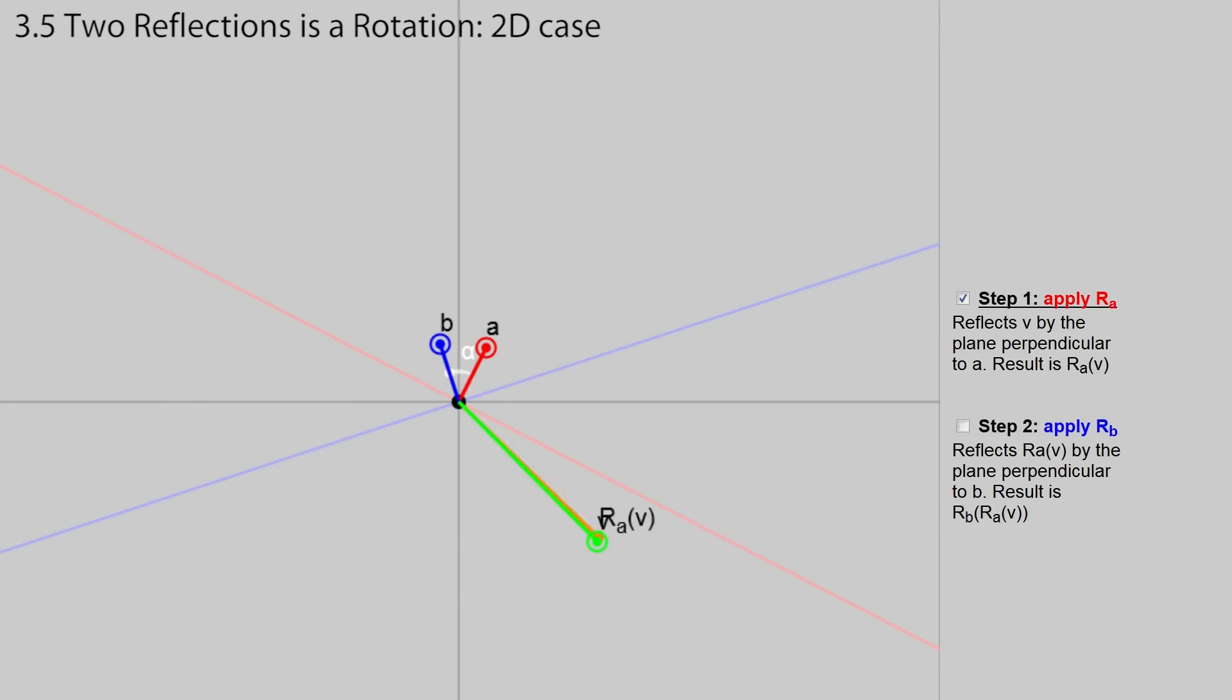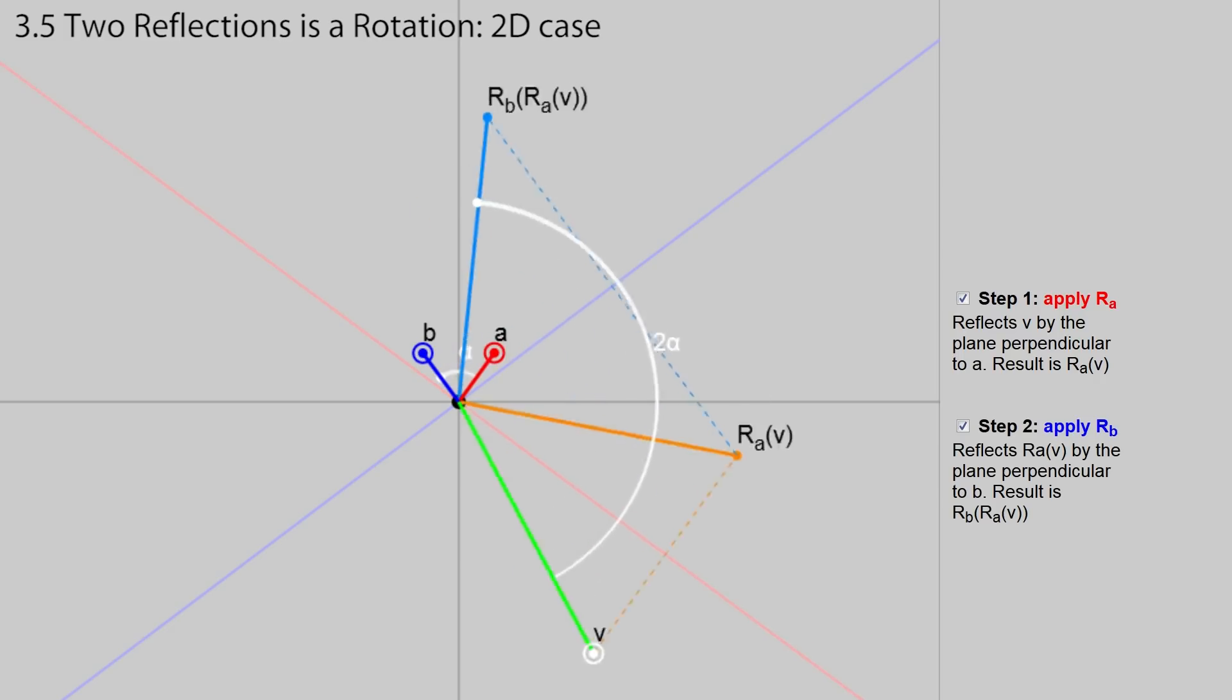It turns out that if we apply two successive reflections to v, using vector a followed by vector b, we get a rotation by twice the angle between the vectors a and b. You can play with this diagram in a linked article.